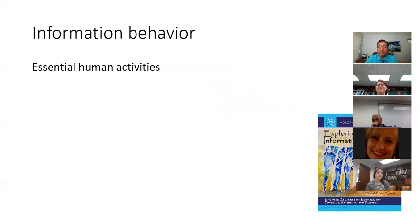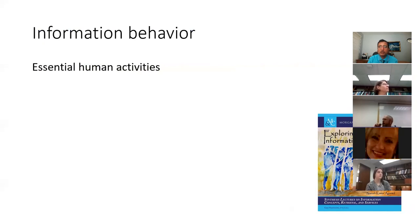Information Behavior can be seen as a field or subfield within the wider field of Information Science, which is easy to understand if you think of a triangle. On one end, there is people or the person; on another, there is information; and on the third side, there is technology. This triangle — the interaction of a person with information, sometimes mediated by technology — can be thought of as the area of concern for Information Science.